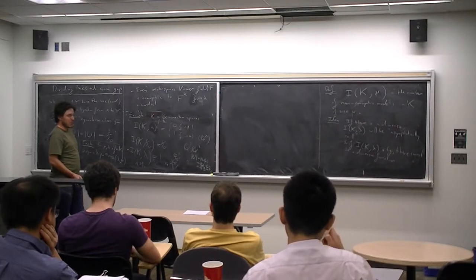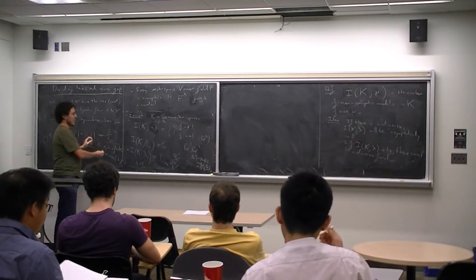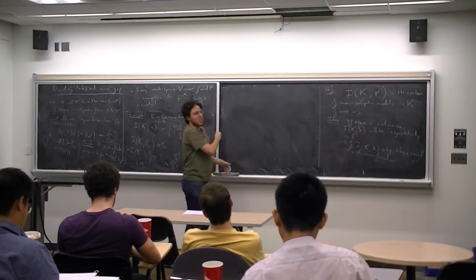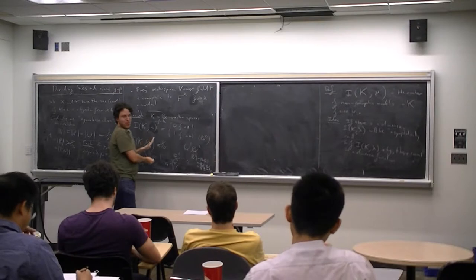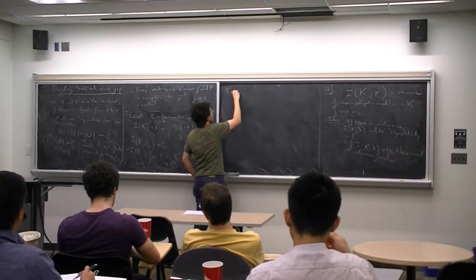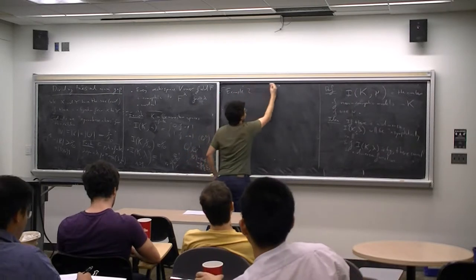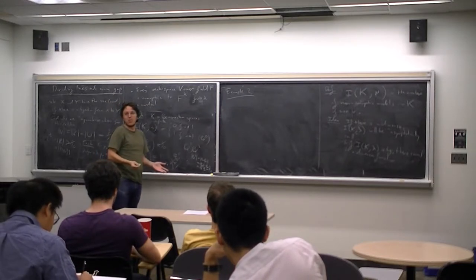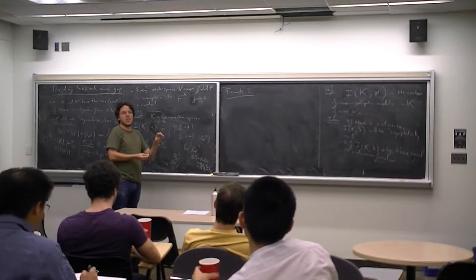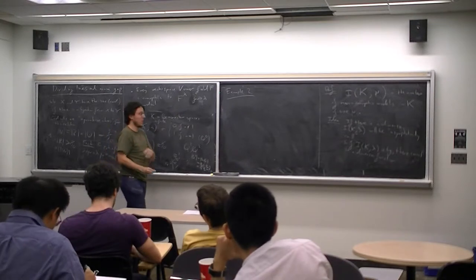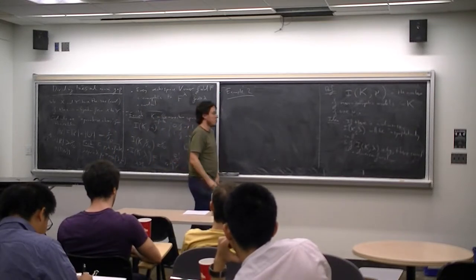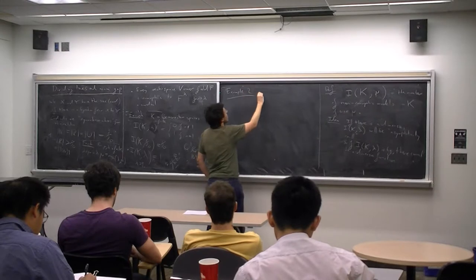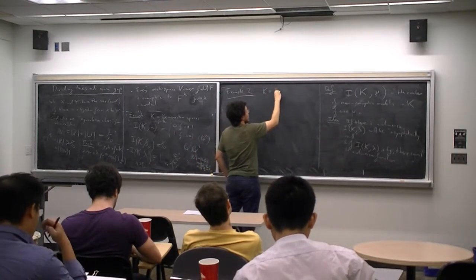Now let's look at an example on the other side — where the spectrum function is not well-behaved. Before that, note that finitely generated abelian groups also have very few: there are only countably many of them, since they're finitely generated and thus a product of a finite set. So again the number is very restricted.